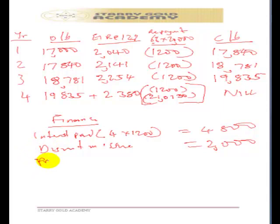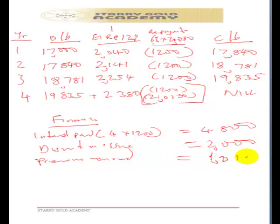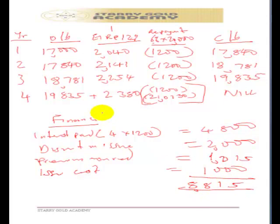We are also redeeming at a higher price, representing a premium on redemption of $1,015. This is also part of the cost we are bearing on this facility. We also have issue costs of $1,000. The sum of all these components represents our total finance cost, which equals $8,815 — consistent with the effective interest rate figures computed in the table.